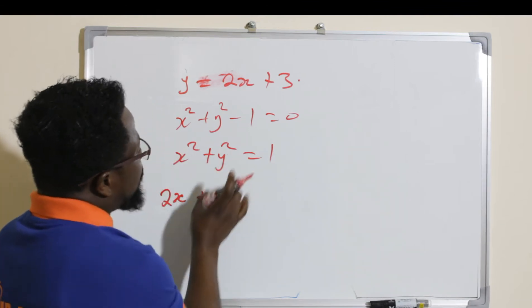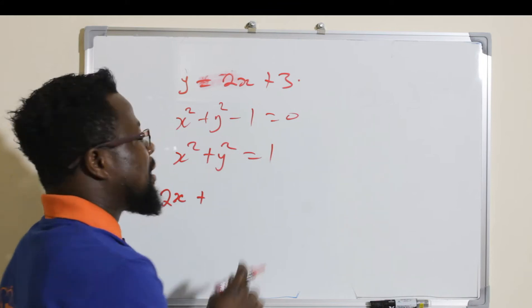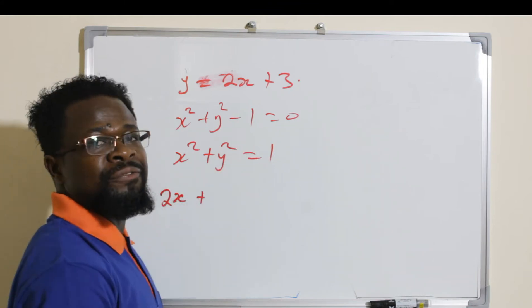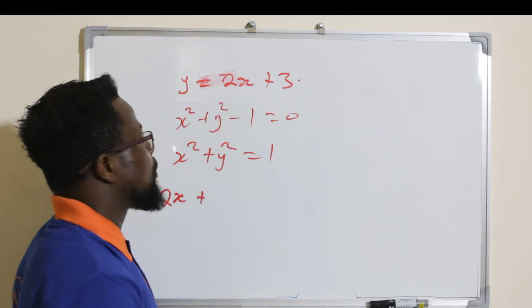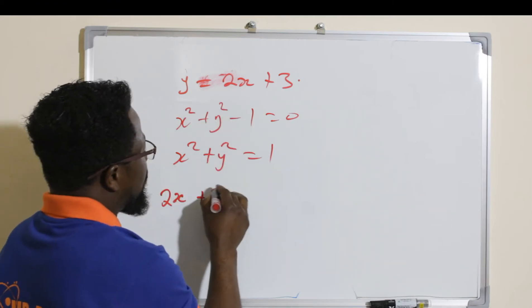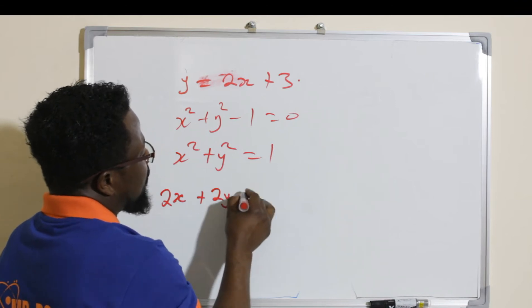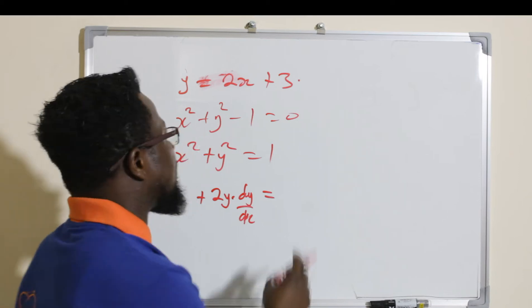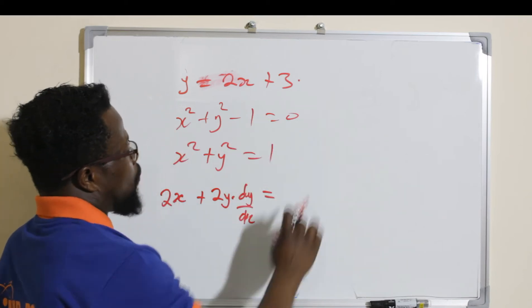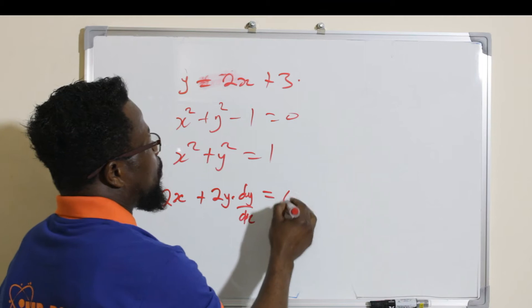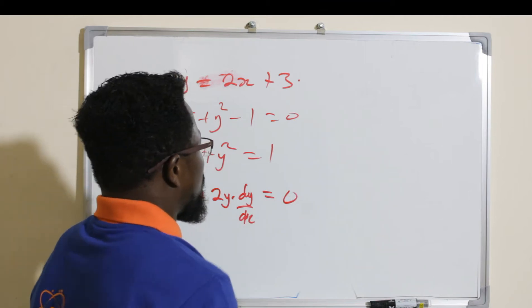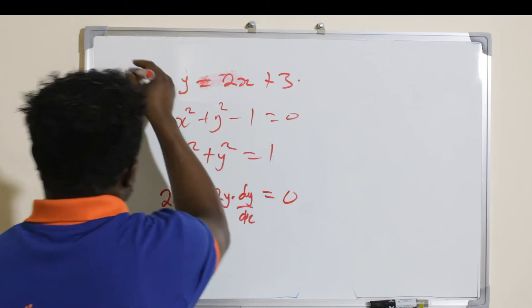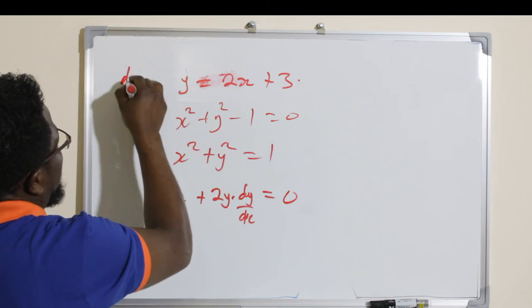Then I go to the other side and take the derivative of y². Remember, this is a function on its own and I'm taking the derivative of this function with respect to itself, so this is going to give me 2y · dy/dx. That must equal zero because the derivative of the constant 1 is zero.